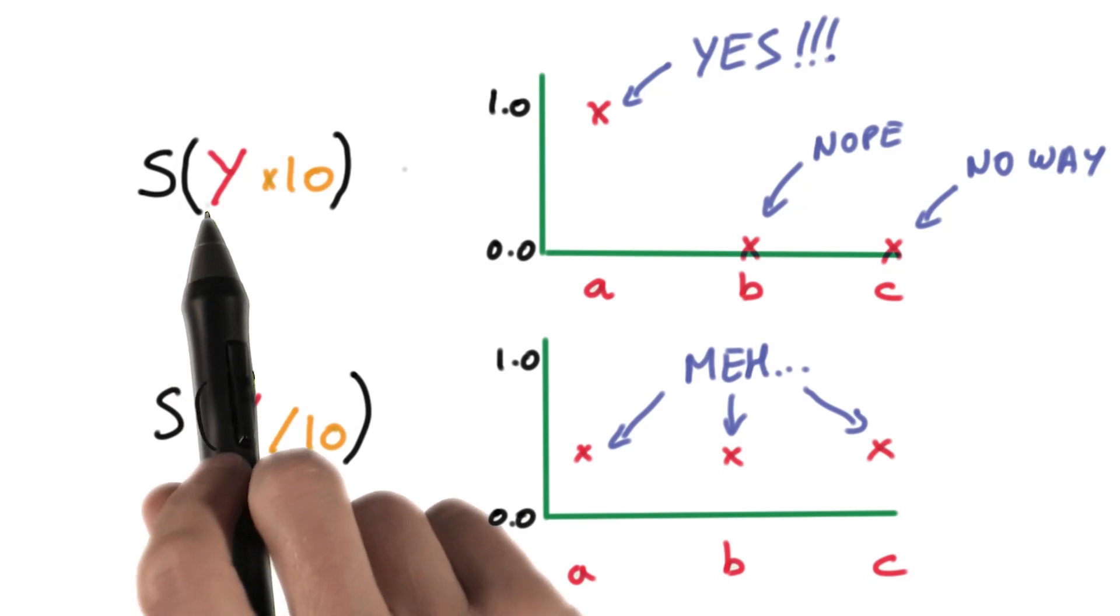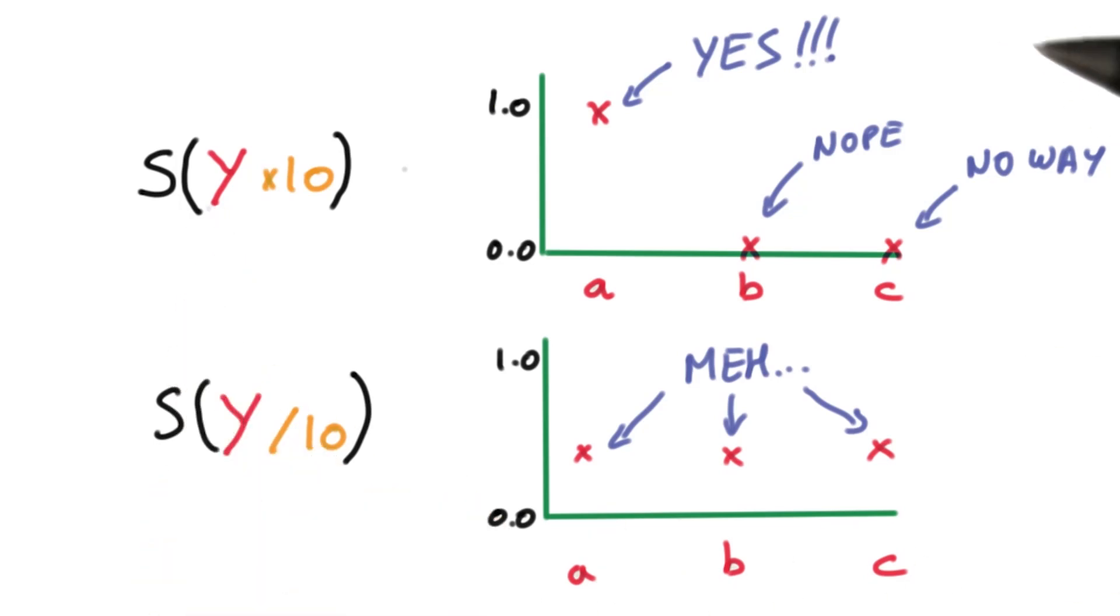In other words, if you increase the size of your outputs, your classifier becomes very confident about its predictions. But if you reduce the size of your outputs, your classifier becomes very unsure. Keep this in mind for later.